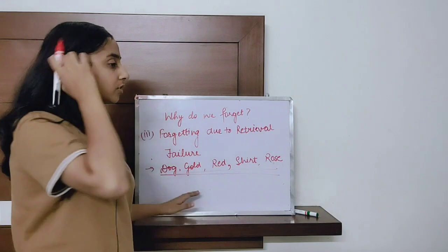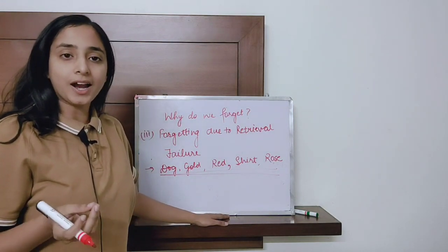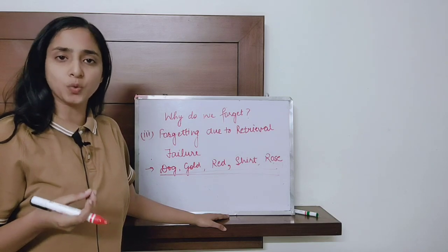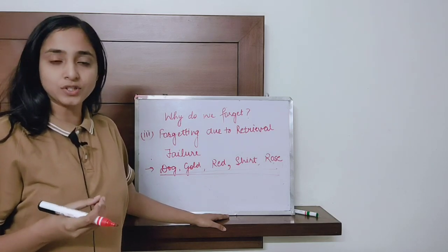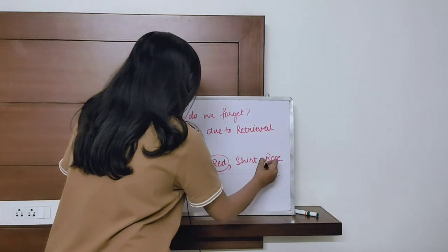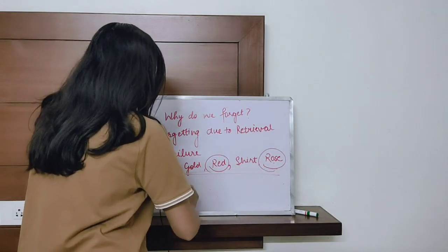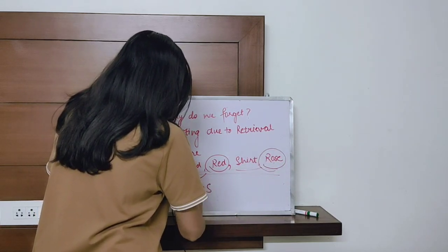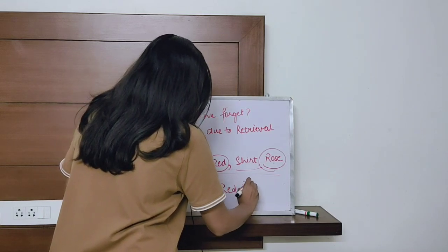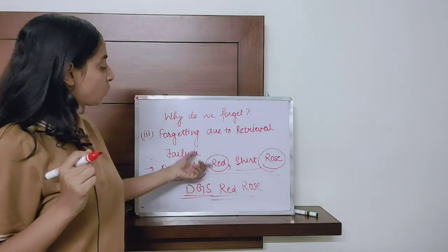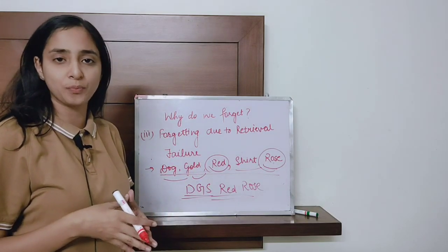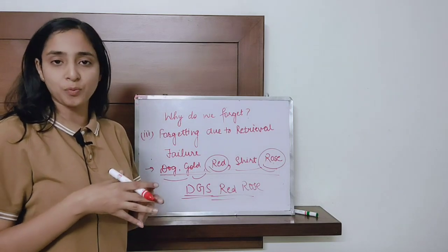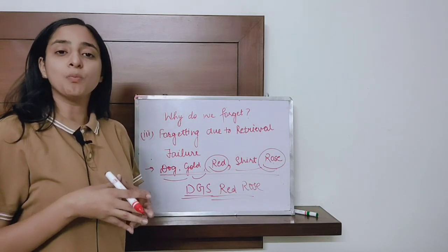If I am given only two minutes to remember those five words and asked after 30 days what they were, chances are I may forget one or two. But there are certain hints I can use — for example, red and rose go together, and I can remember dog, gold, and shirt as DGS. If I chunk this information into smaller pieces it becomes easier to remember. This theory ultimately says that if we use inappropriate cues or hints, we are more likely to forget.